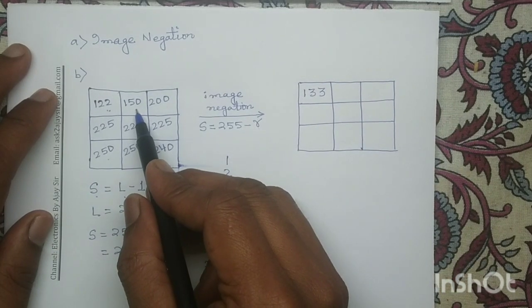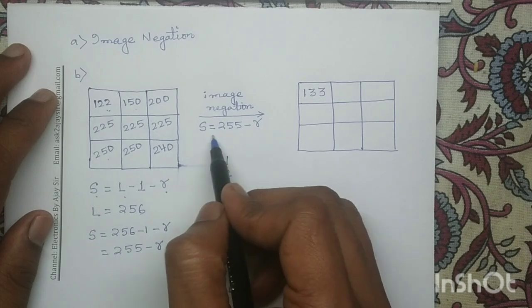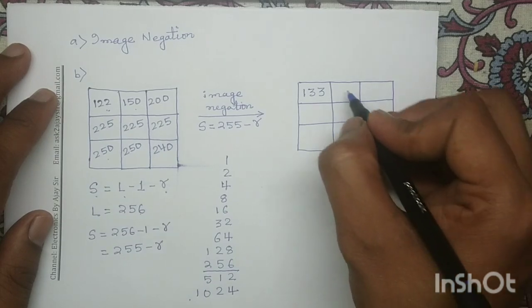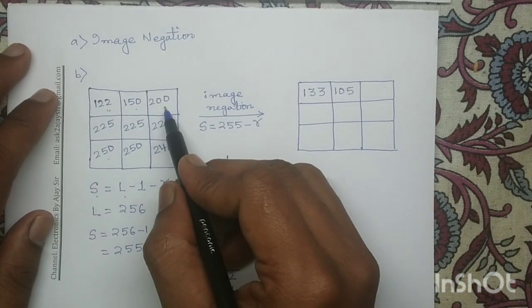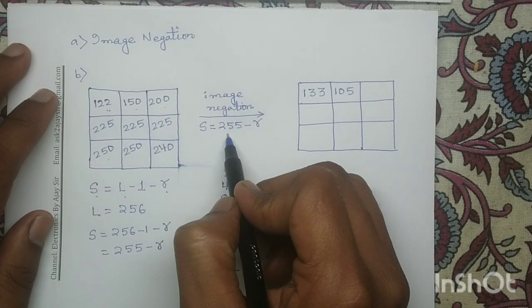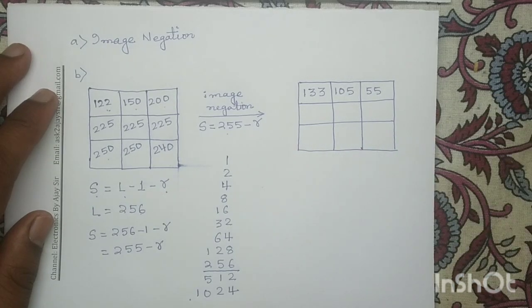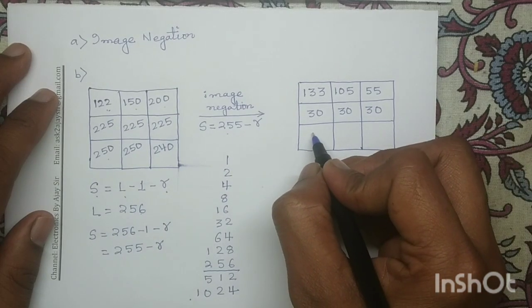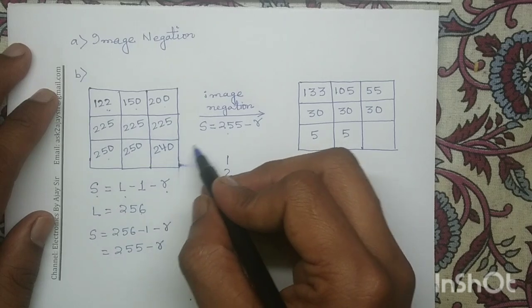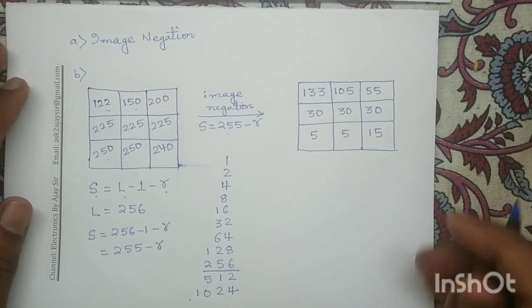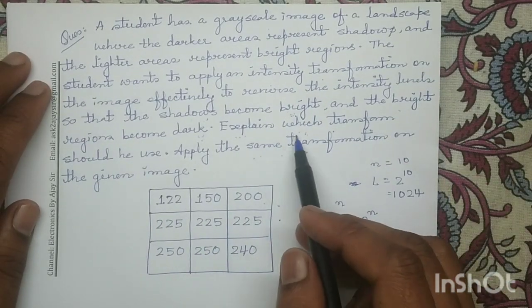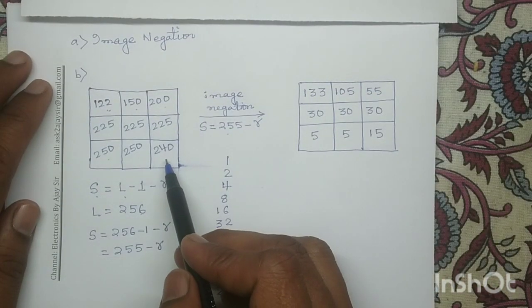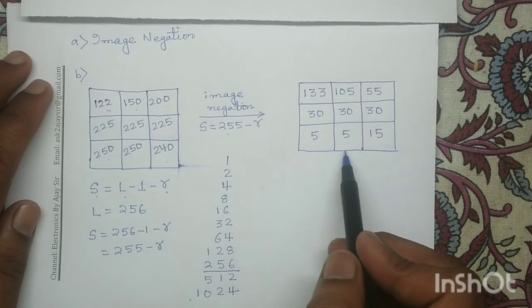Similarly, applying image negation on pixel 150 gives 255 minus 150, which equals 105. On pixel 200, applying 255 minus 200 gives 55. For the remaining pixels, 255 minus 240 gives 15. For this given question, we have identified the intensity transformation operation as image negation, applied it to the given input digital image, and generated the output image.